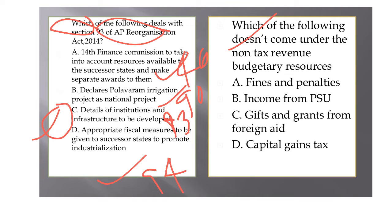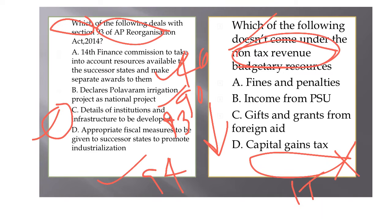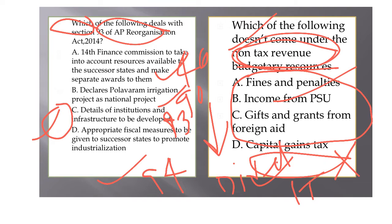The next question is about non-tax revenues. Revenue for the government comes from direct taxes, indirect taxes, and non-tax revenues. Direct taxes include income tax, corporate tax, wealth tax, and capital gains tax. Capital gains tax is a direct tax, so it does not fall under non-tax revenue. Non-tax revenues include fines and penalties, fees from RTI, passport services, driving license services, traffic violation fines, income from PSUs, and gifts and grants through foreign aid. The answer to this question is option D.